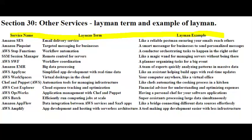Here's a brief layman explanation for each service. Amazon SES — Email Delivery Service. It ensures your emails are reliably delivered, like a trustworthy postman for your digital letters.